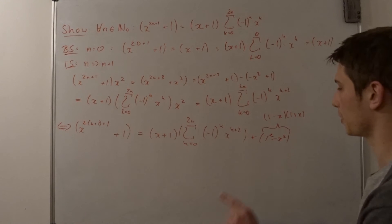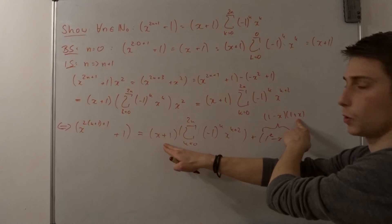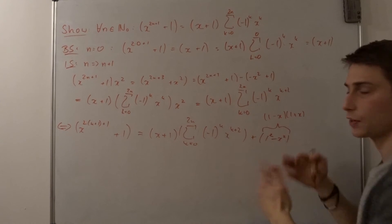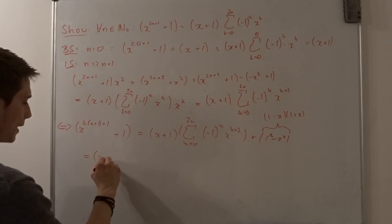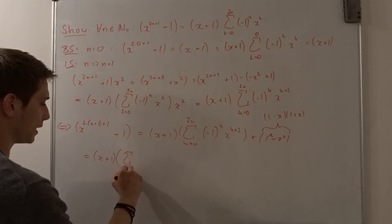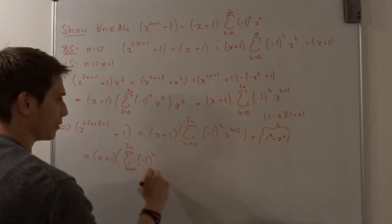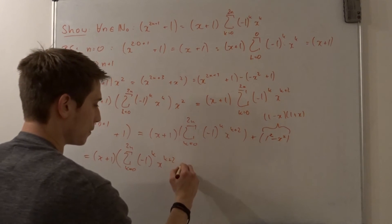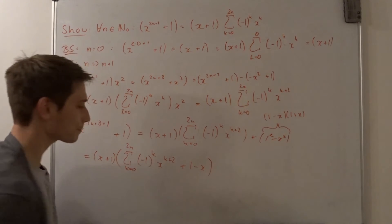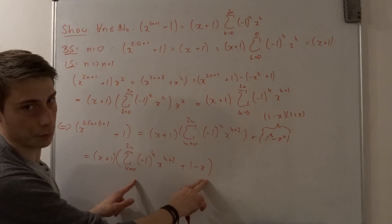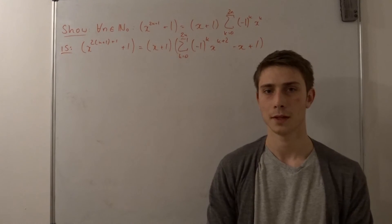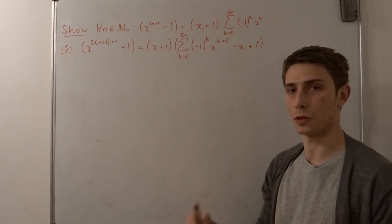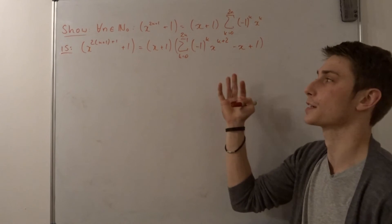And I hope you can see where I'm going — we have the same factor x plus 1 right here. Isn't that absolutely astonishing? We have the same factor and we can factor it out. So this is equal to x plus 1 times the sum from k equals 0 to 2n of minus 1 to the k-th power times x to the k plus 2 power, plus 1 minus x. To make the last step clearer I'm going to write out the first and last terms explicitly.